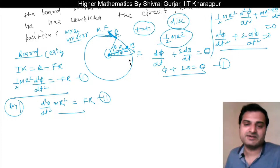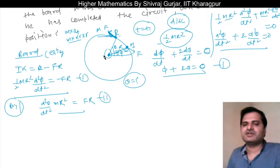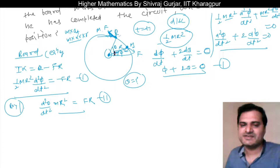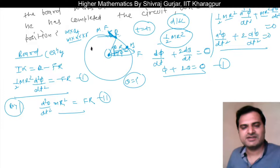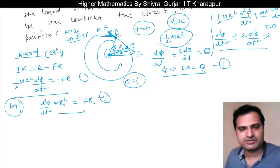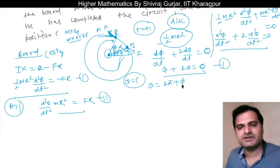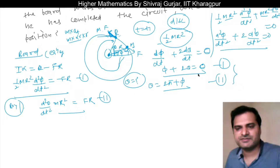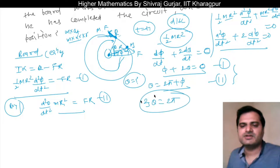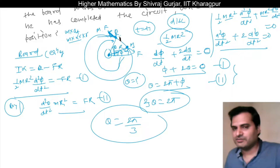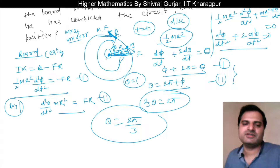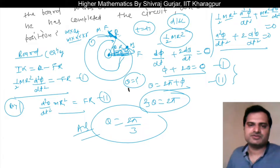Now when the man completes the circuit, he has moved 2π relative to the board, so θ = 2π + φ. Substituting into φ + 2θ = 0: φ + 2(2π + φ) = 0, giving 3φ = −4π... Let us re-examine: adding the two equations gives 3θ = 2π, so θ = 2π/3. When the circuit is complete, the man's position is 2π/3 from his initial position.